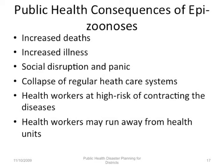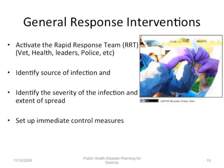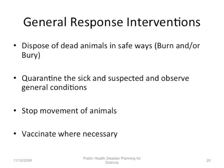Response interventions include: farmers should report incidents to animal and human health workers; provisional quarantine of affected areas if necessary; confirming the occurrence of the outbreak and notifying authorities; activating the rapid response team including vets, health workers, leaders, and the police; identifying the probable source and severity of infection and extent of spread; setting up immediate control measures; disposing of dead animals safely by burning or burying them; quarantining the sick and suspected and observing general conditions; and stopping movement of animals and vaccination where necessary.